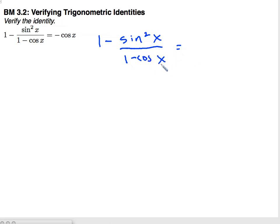What I'm going to do first is replace this sine squared with my Pythagorean identity: 1 minus 1 minus cosine squared x over 1 minus cosine x.